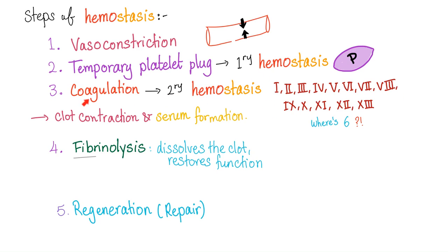We don't leave the coagulation cascade active all the time. We should put brakes on it, because power corrupts and absolute power corrupts absolutely. It's called checks and balances.